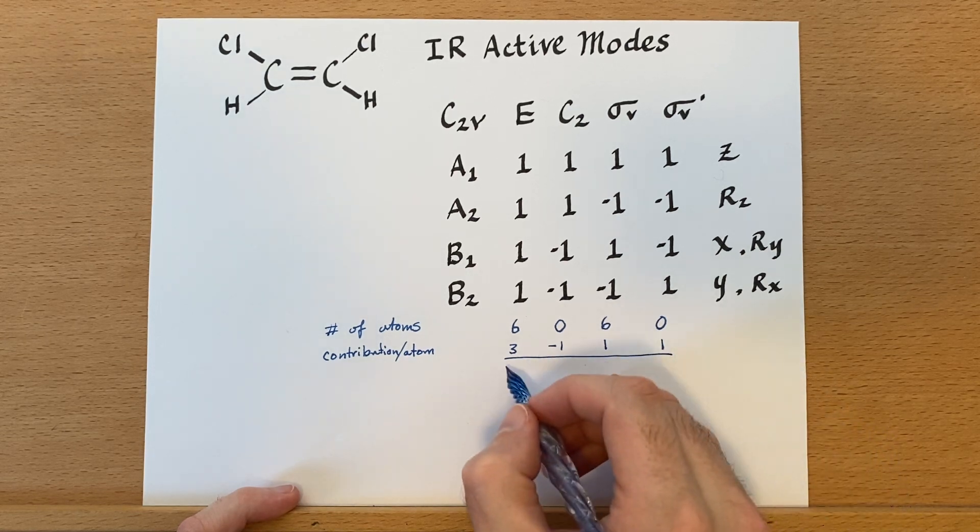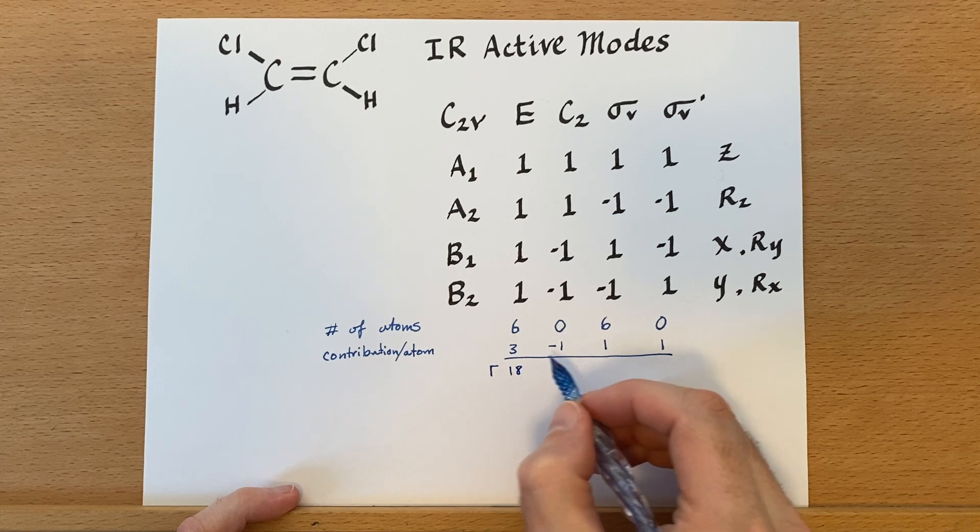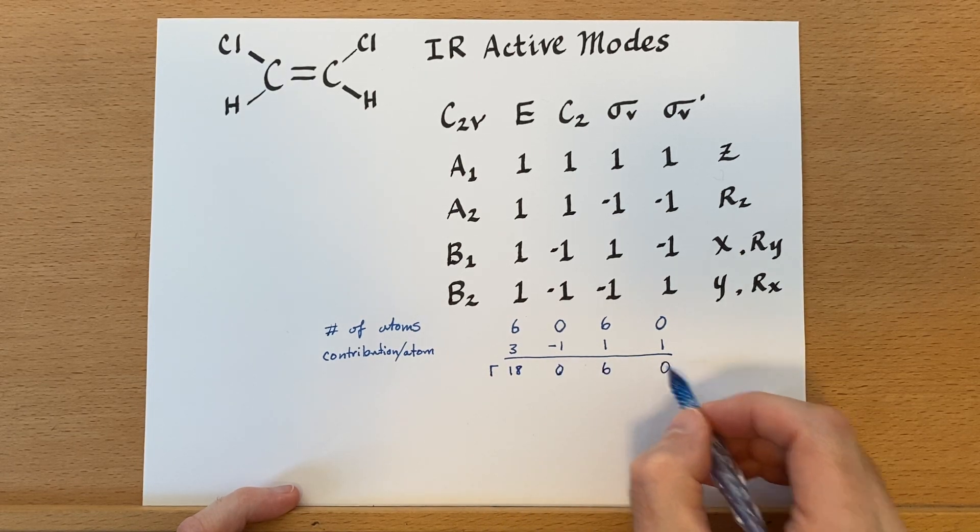For reflection planes, it's one. We multiply these two together to get the reducible representation. 18, zero, six, zero.